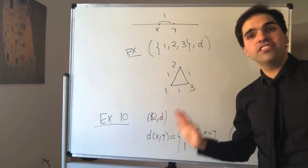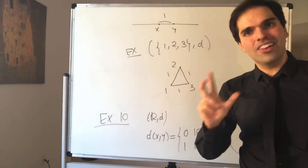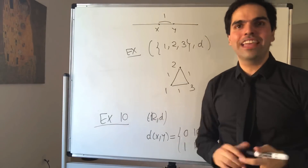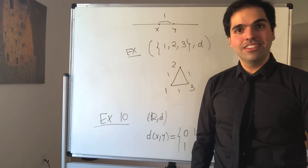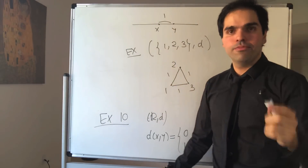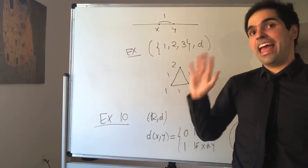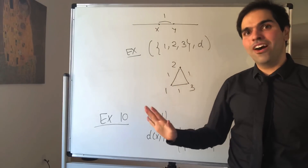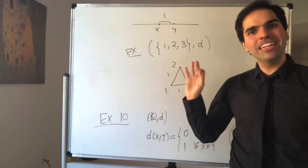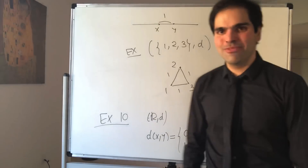Now we've seen lots of examples of metric spaces, and therefore really understand that everything we'll prove from now on will hold true for all ten examples at once — we're literally killing ten birds with the same stone. Alright, thank you very much.